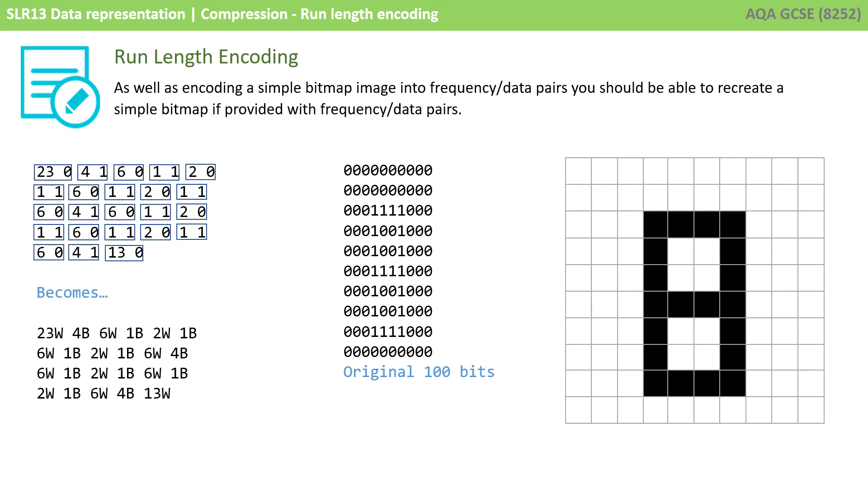If we were to encode this original bitmap image, it would take up 100 bits, one for every pixel. You can see here how we can get a substantial saving, especially with larger images, if we use frequency data pairs.